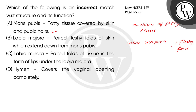Now let's see labia minora — a paired fold of tissue under labia majora. The opening of the vagina is often covered partially by a membrane which we call the hymen. So what is hymen? It partially covers the vaginal opening.